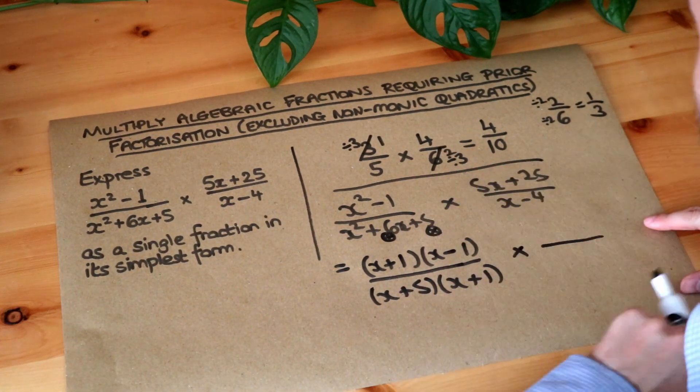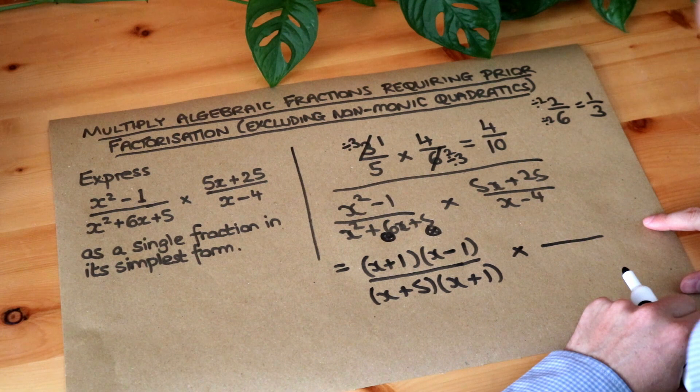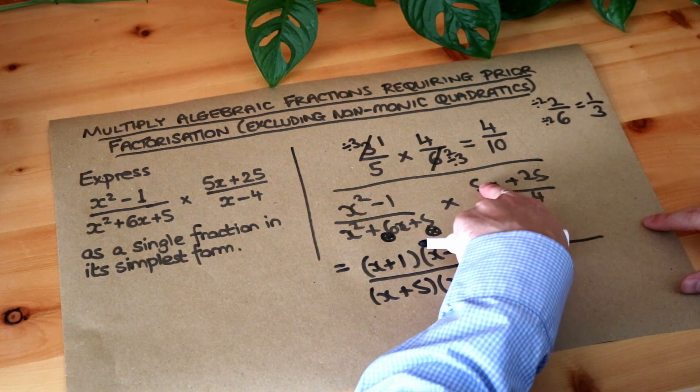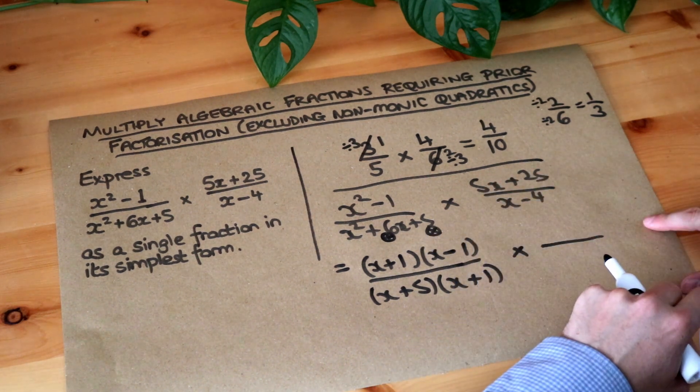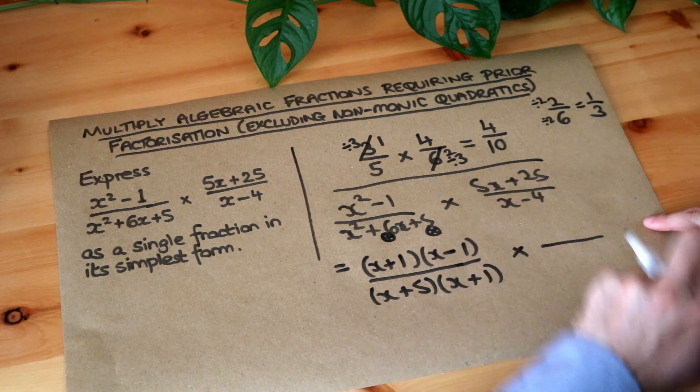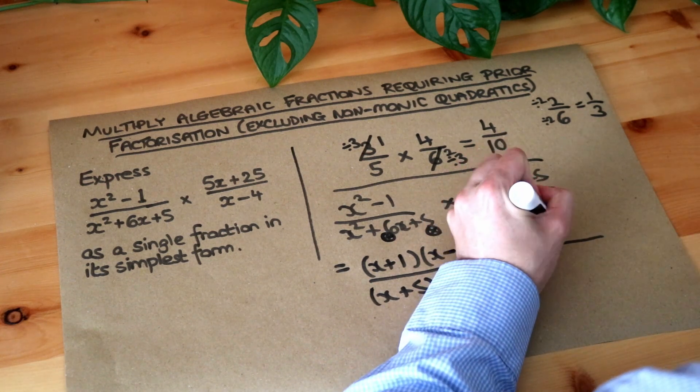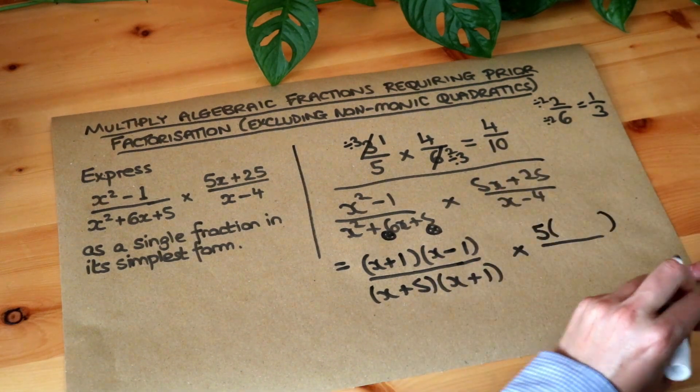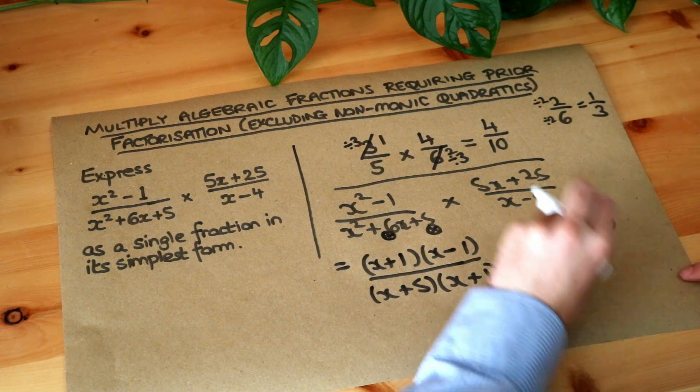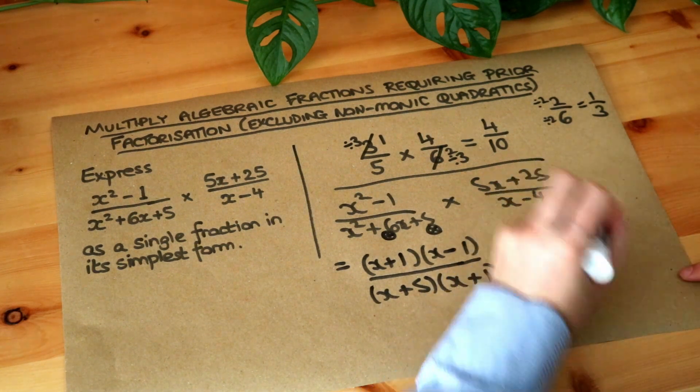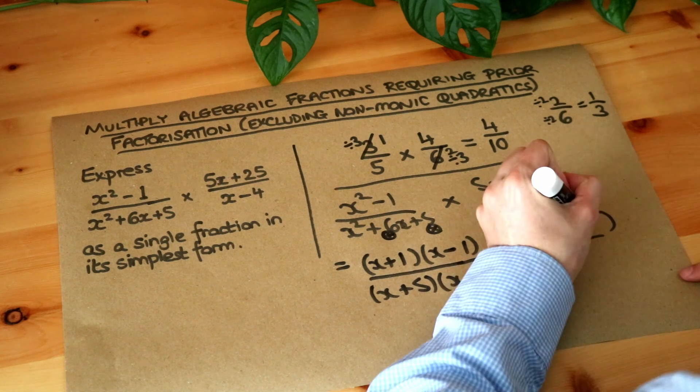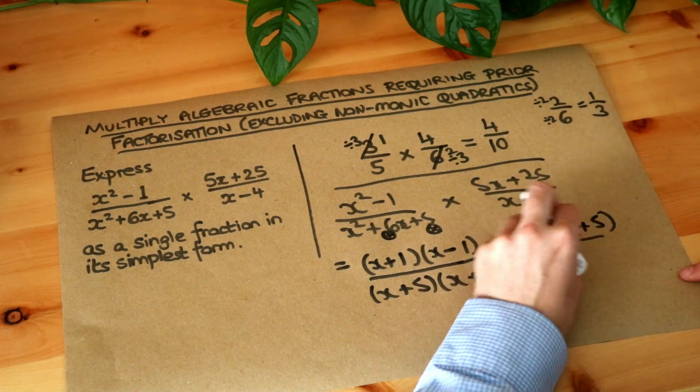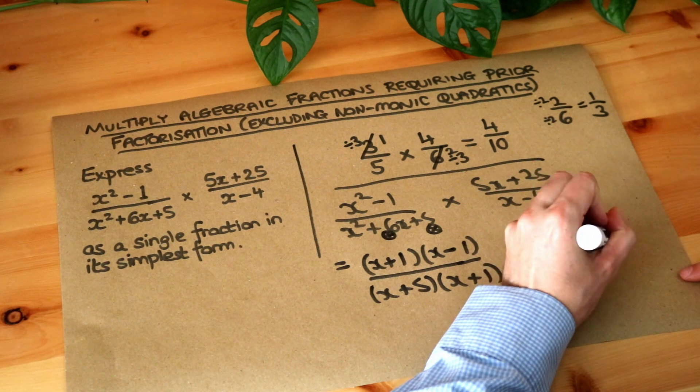Now, this thing here, how can we factorize it? Well, we always look for a common factor first. Is there something common to this and this? Well, they both have 5 in common, a factor of 5. So we factorize the 5 out, have a single bracket, and then think, well, 5 times what is 5x? Well, it's x. And 5 times what is 25? Well, it's plus 5. And x minus 4, there's nothing we can factorize there. So we just put the x minus 4.